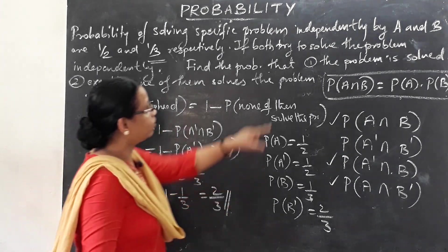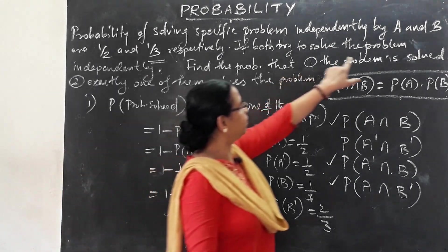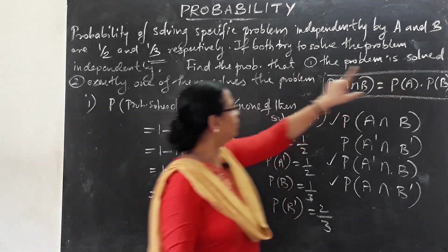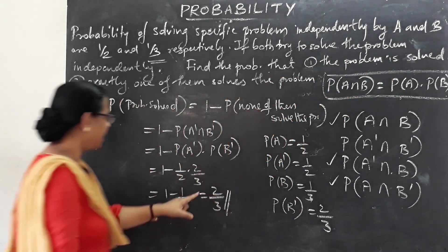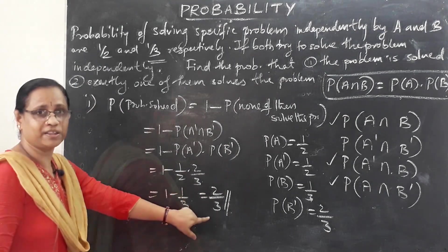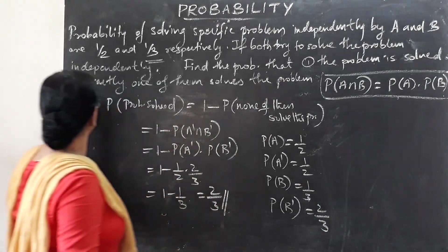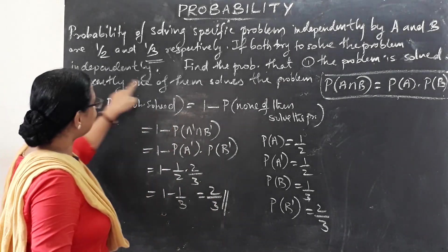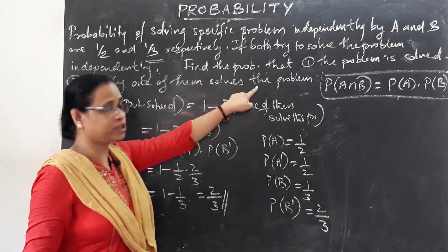So the answer to the first question — the probability that the problem is solved — is 2/3. Now for the second question: find the probability that exactly one of them solves the problem.